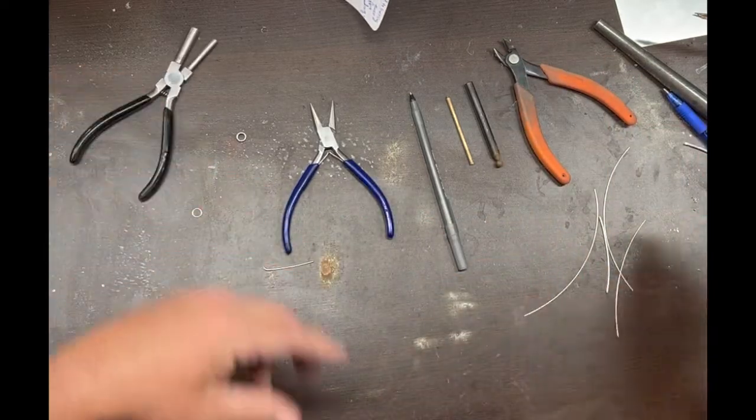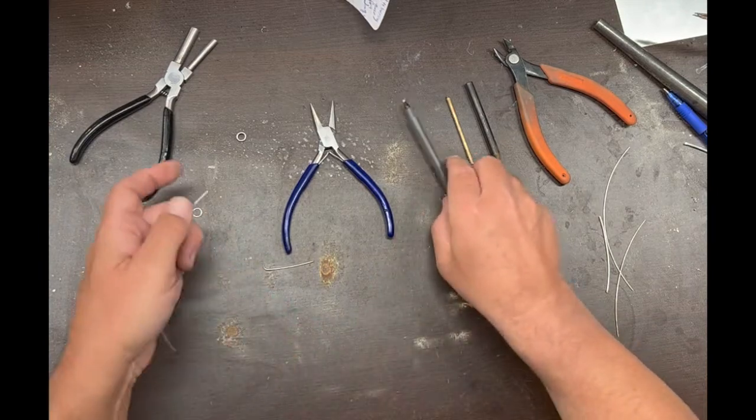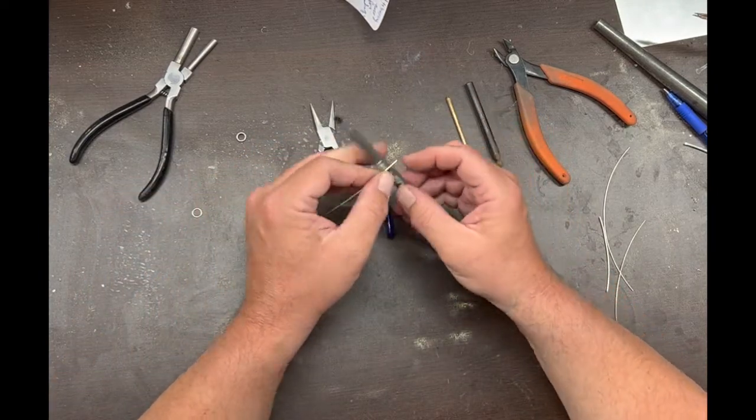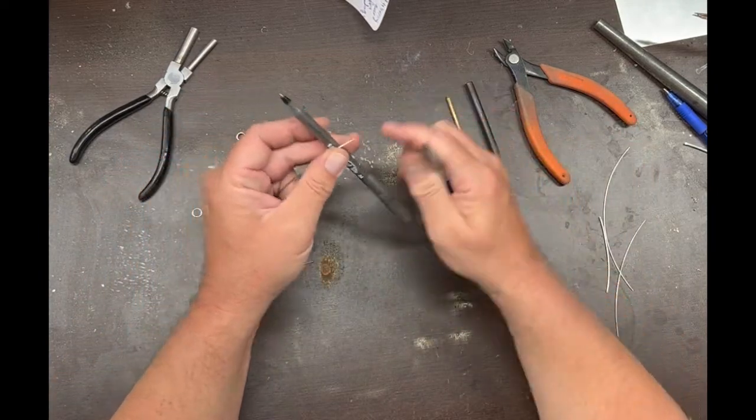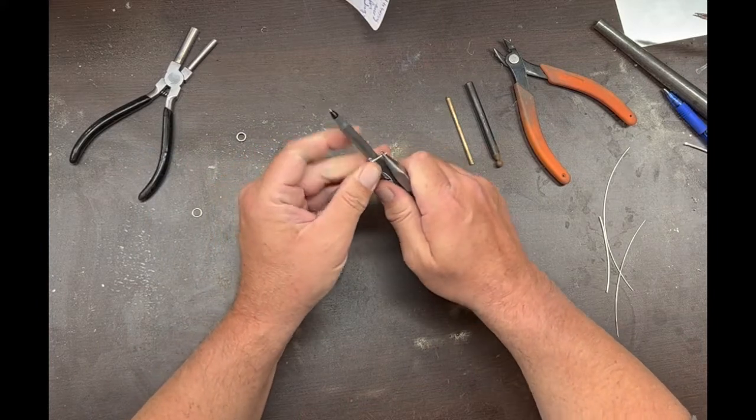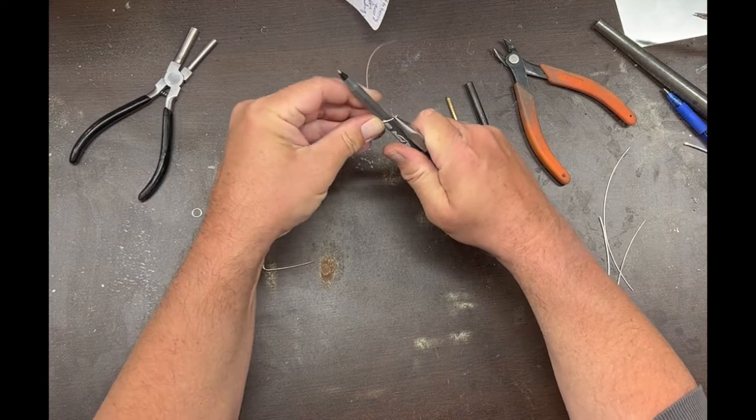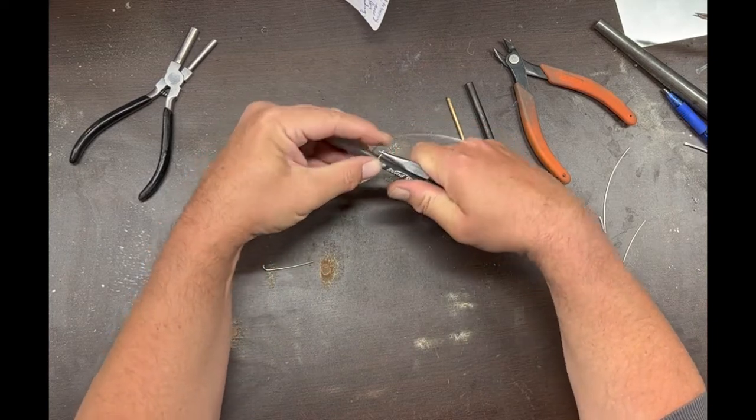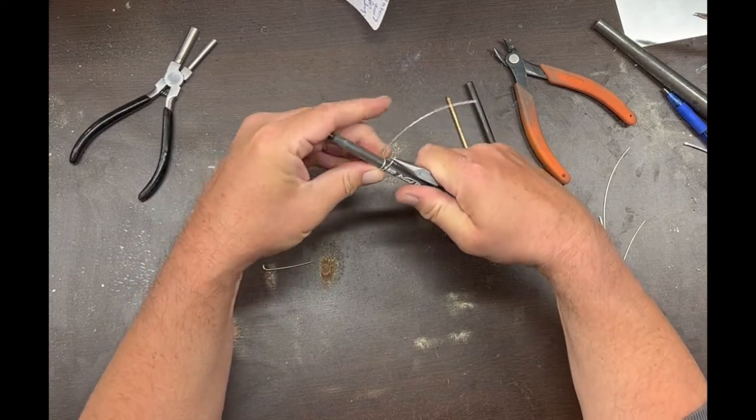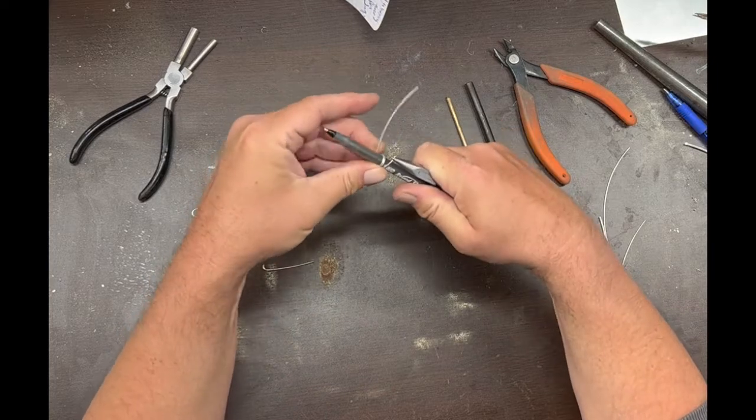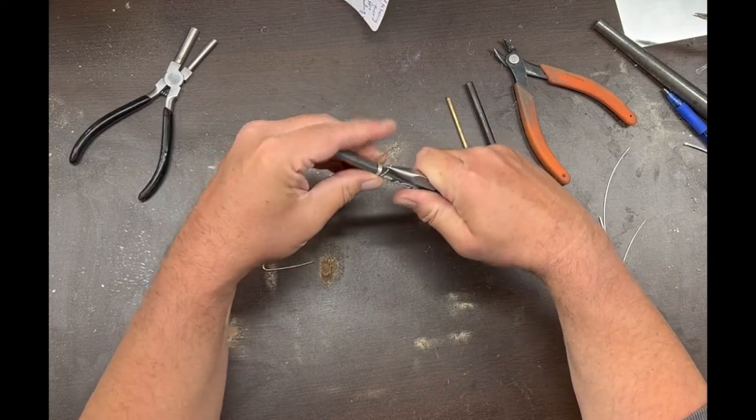That's probably the easiest way, but if you need a different sized one and you don't have bail making pliers of the right diameter, just use needle nose pliers and whatever cylindrical object you have. I just use the needle nose pliers to hold the wire so I can get started, and then you can wrap it around whatever it is and produce the same kind of thing.